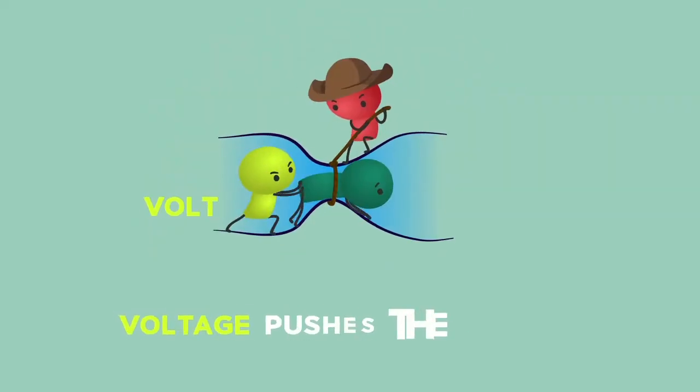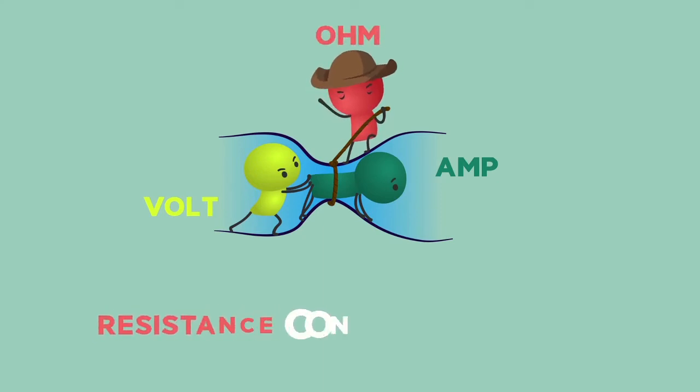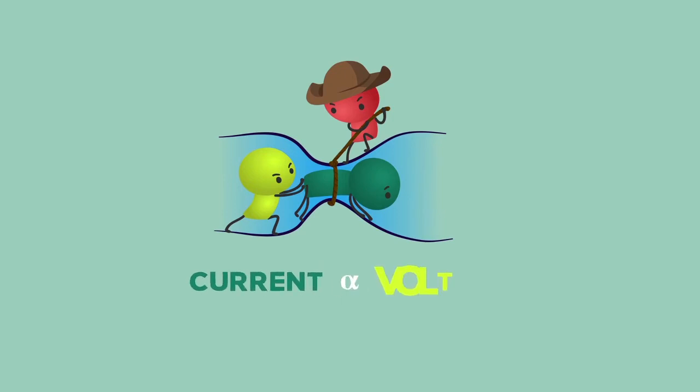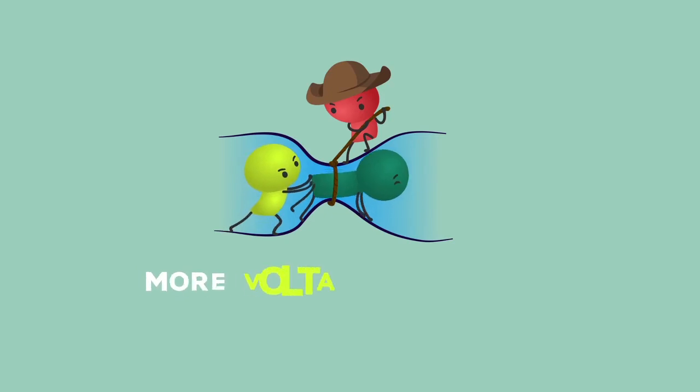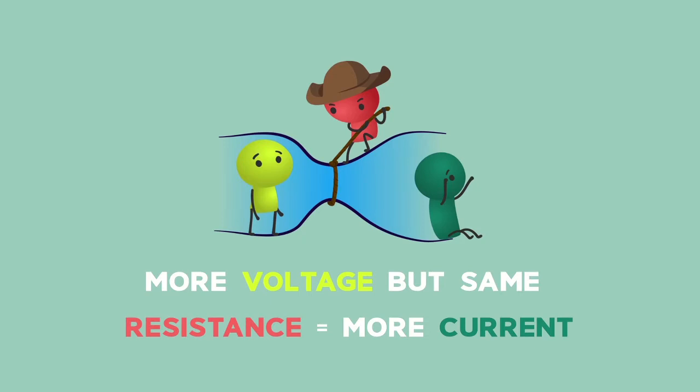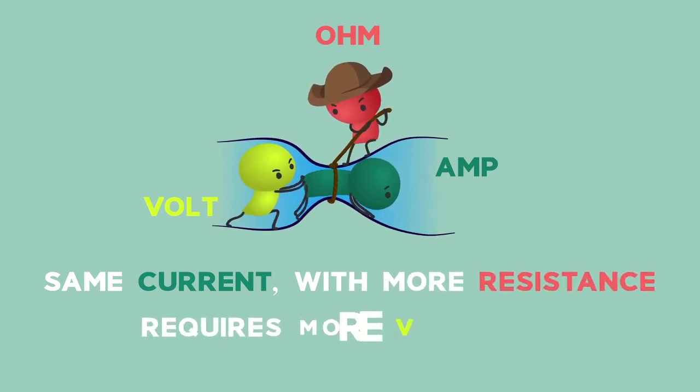So voltage pushes the charge, shown as amps, through, while resistance controls the rate at which current could flow through. The three are always in a relationship. If the voltage pushed harder but the resistance stayed the same, more current would flow. If the current had to stay the same but the resistance was increased, the voltage would also have to work harder to keep the current flowing at the same rate.